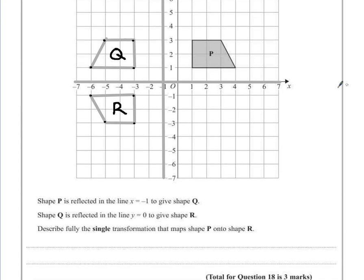Now to earn our final marks for this, it says describe fully the single transformation that maps P onto R. So one single transformation, not two reflections. One thing we should notice is this is turned around 180 degrees. So what we have here is a rotation.